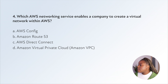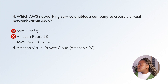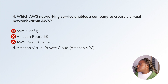Question four: which AWS networking service enables a company to create a virtual network within AWS? AWS Config is about configuration of AWS resources — not this. Amazon Route 53 is a domain name service designed to give developers and businesses reliable ways to route users to internet applications — not about creating a virtual network. AWS Direct Connect establishes a dedicated network connection from your premises to AWS. Amazon VPC gives you complete control over your virtual networking environment, so D is the right answer.